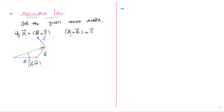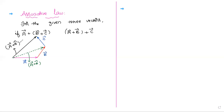First I am checking the right-hand side. Now that A-bar plus B-bar is added to C-bar. So A-bar plus B-bar plus C-bar means from the initial point to the final point, I join them. This time I take a solid line. The black one is A-bar plus B-bar plus C-bar.